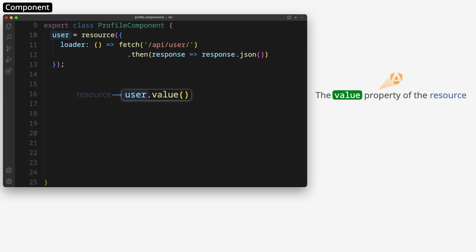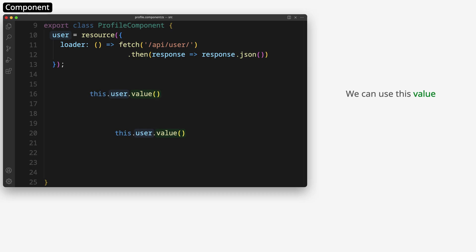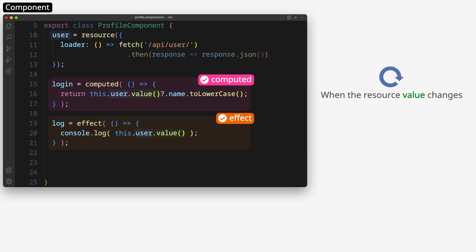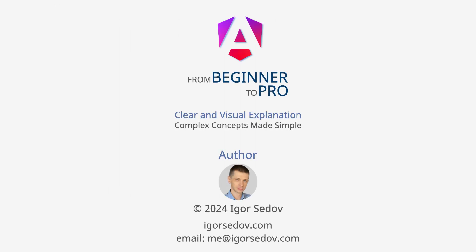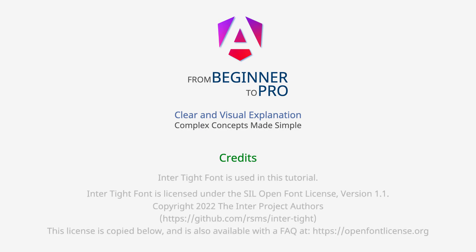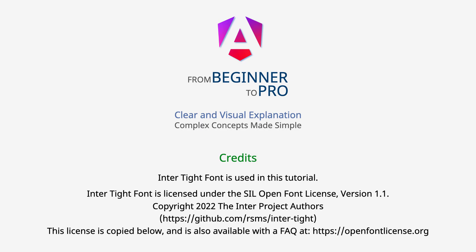The value property of the resource is a signal, so we can use this value in computed signals and effects. When the resource value changes, computed signals recalculate and effects re-execute.